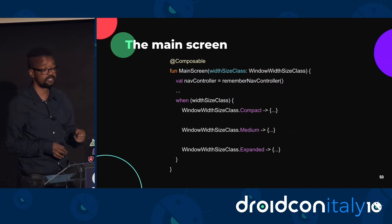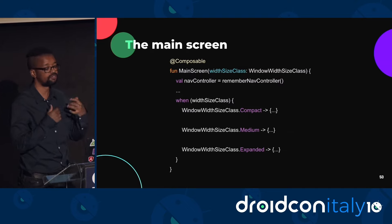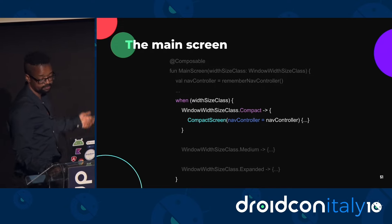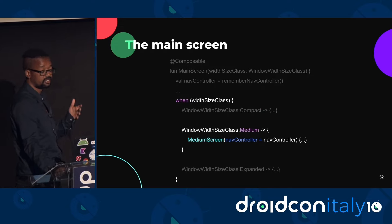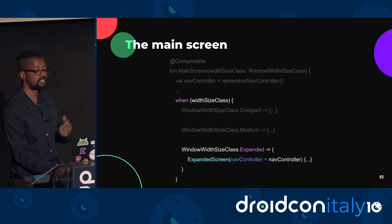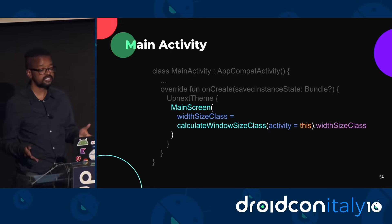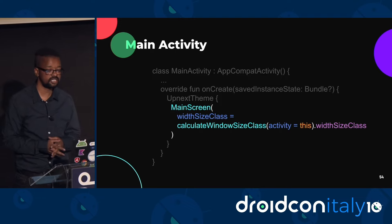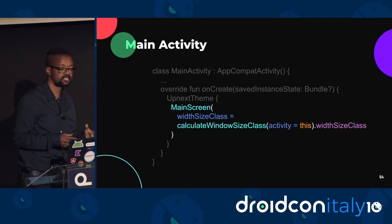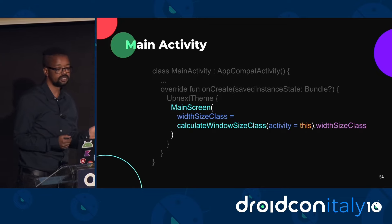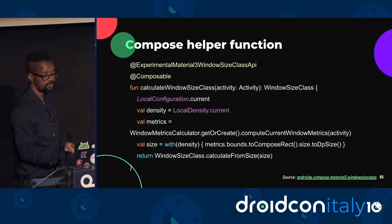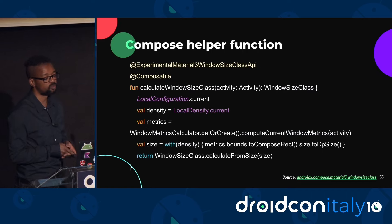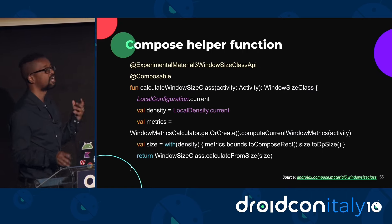The main screen composable now has a new responsibility: to decide which screen will be rendered based on the current window size class configuration. If it's compact, it renders compact screen; if medium, it renders medium screen; if expanded, it renders expanded screen. The main activity passes the current window size class configuration to the main screen composable. In Compose, there's a handy function called calculateWindowSizeClass which requires the current activity as an argument, giving you the current window size class configuration.